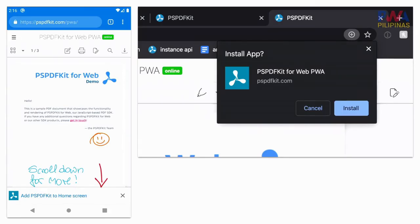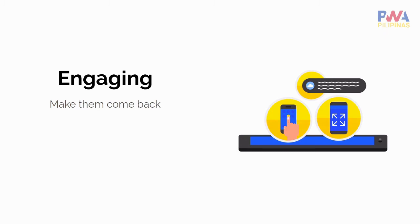Here is an example of how you're able to install a progressive web app. And it is engaging because you can remind your users to come back even after closing the application, because it works in the background.